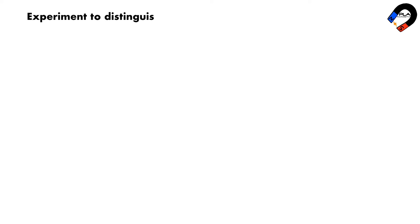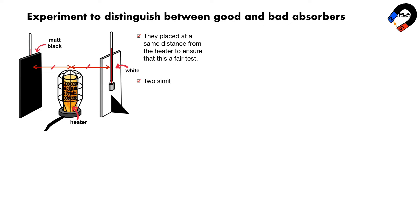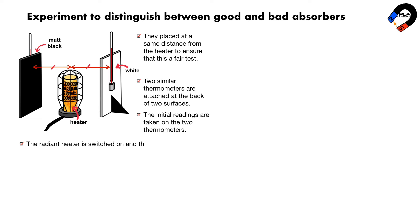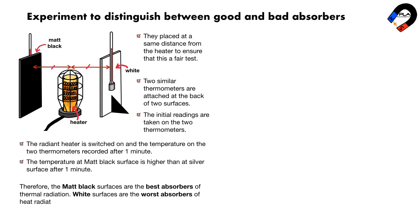An experiment to distinguish between good and bad absorbers of infrared radiation: set up the experiment as shown. Two metal surfaces are painted matte black and white, placed at the same distance from the heater to ensure a fair test. Two similar thermometers are attached at the back of the two surfaces and initial readings are taken. The radiant heater is switched on and temperatures recorded after one minute. The temperature at the matte black surface is higher than at the white surface. Therefore, matte black surfaces are the best absorbers and white surfaces are the worst absorbers of thermal radiation.